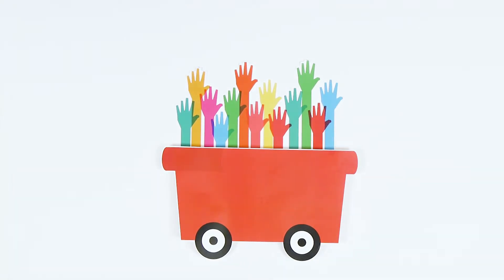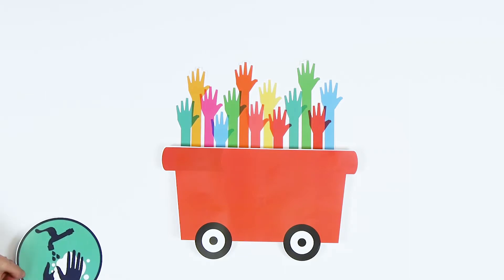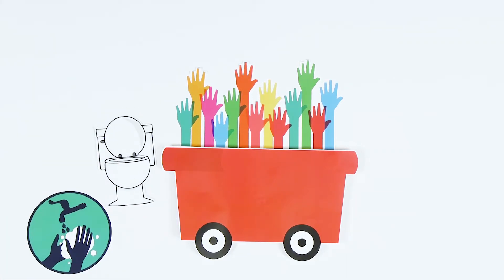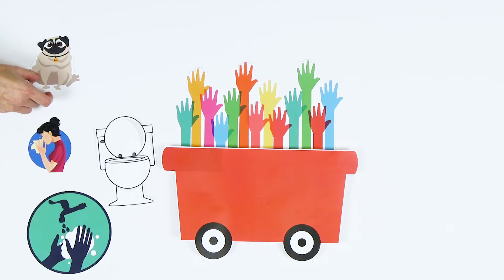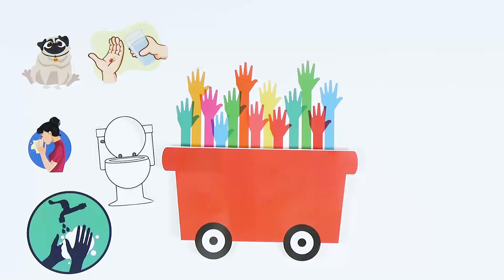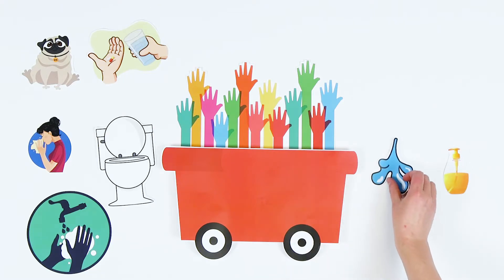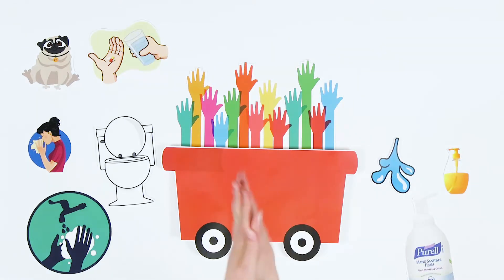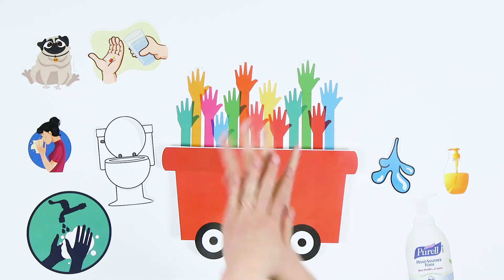Now what does it take to get on the clean hand wagon? I wash my hands after using the bathroom, before I eat, after sneezing or coughing, after touching animals, before I take medicine, or when my hands look dirty. I use soap and water and scrub all over. If soap and water are not around, I can use hand sanitizer, but I have to scrub until my hands are dry.